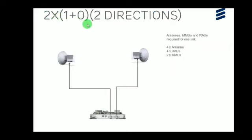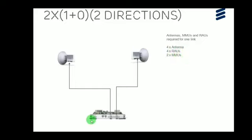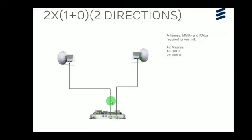For 2×1+0 in two different directions, the requirements are: 4 antennas (near and far end), 4 radios (near and far end), and 2 MMUs (near and far end). At the near end, 1 MMU is installed with 2 antennas pointing in different directions, 2 radios, and 2 AF cables. The same configuration is installed at the far end.